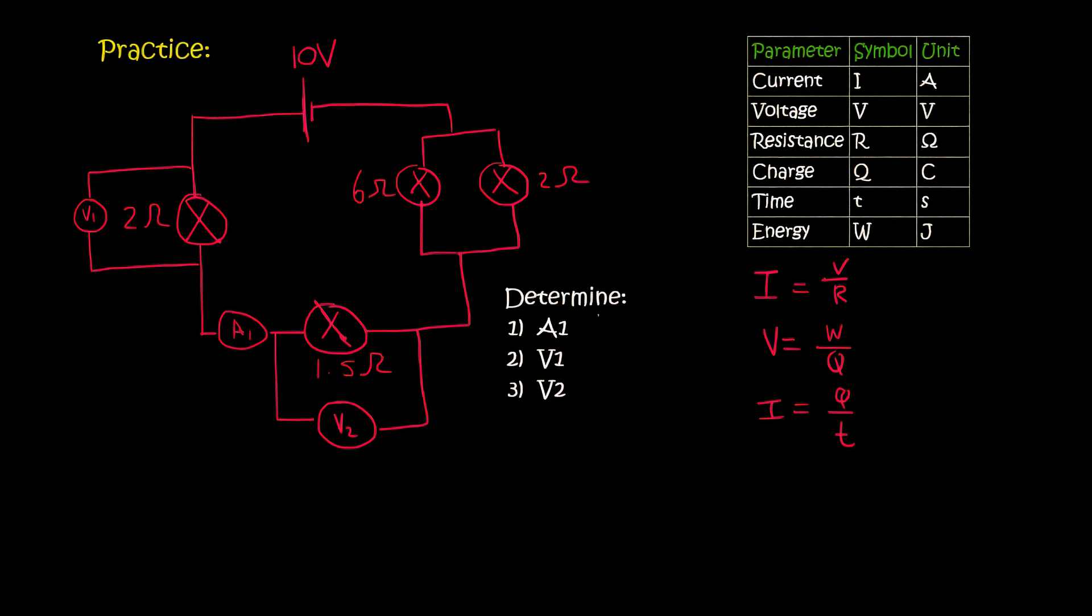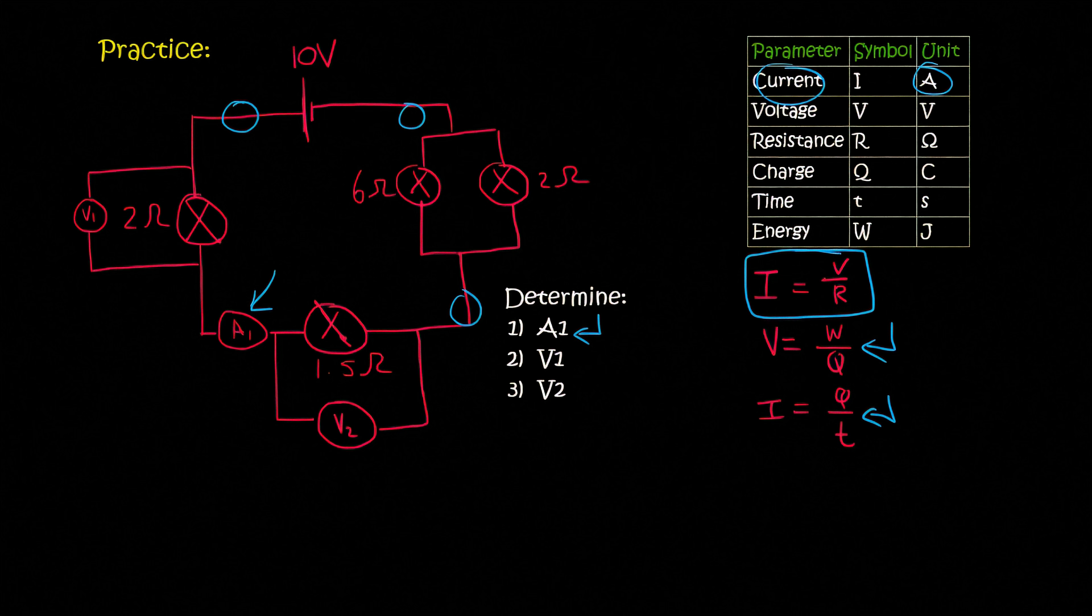And so the first question says determine A1. Now remember A is current, and so we're typically going to use this formula. You only use these formulas when they start talking about energy and charge and things like that. Those aren't very common questions or formulas to use. So if we want to work out A1, now remember A1 is the current, and we say that the current is the same everywhere in the series circuit. The only place where it might change a little bit is when it splits up over here and over here, but then it will join back together again.